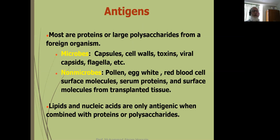Antigens are mostly proteins or large polysaccharides from a foreign organism. They can be from microbes or non-microbes. In the case of microbes, any structure — capsule, cell wall, toxin, viral capsid, flagella, etc. — can act as an antigen. In the case of non-microbes, some people are allergic to egg or other food proteins, and surface molecules from transplanted tissue can also act as antigens. Lipids and nucleic acids are only antigenic when combined with protein or polysaccharides.